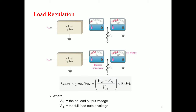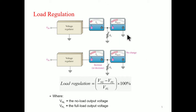Load regulation: the change in load current due to variation in RL has practically no effect on the output voltage. There are changes in the load value and load current, but there is no effect on the output value. Whatever the value changes, there is no change in the output — that is what we call a regulator. Load regulation is equal to (V no-load minus V full-load) divided by V full-load, multiplied by 100 percent.